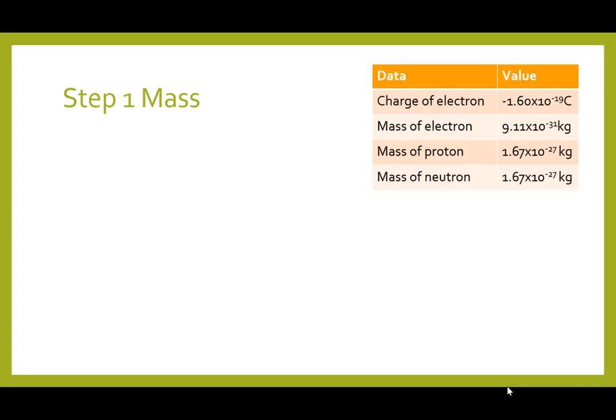So step one is to calculate the mass. And so we need to extract some data that we're going to require to calculate everything. So we're going to take the charge of an electron, the mass of an electron, the mass of a proton, and the mass of a neutron.